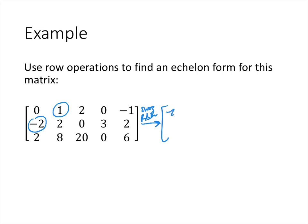Swapping row one and row two gives us: negative 2, 2, 0, 3, 2 in the first row; 0, 1, 2, 0, negative 1 in the second row; and 2, 8, 20, 0, 6 at the bottom. Note that we could have swapped row one and row three instead — that also would have placed a leading entry in the first position. This shows that we can do row reduction in different ways and might end up with different echelon forms depending on the order of operations.